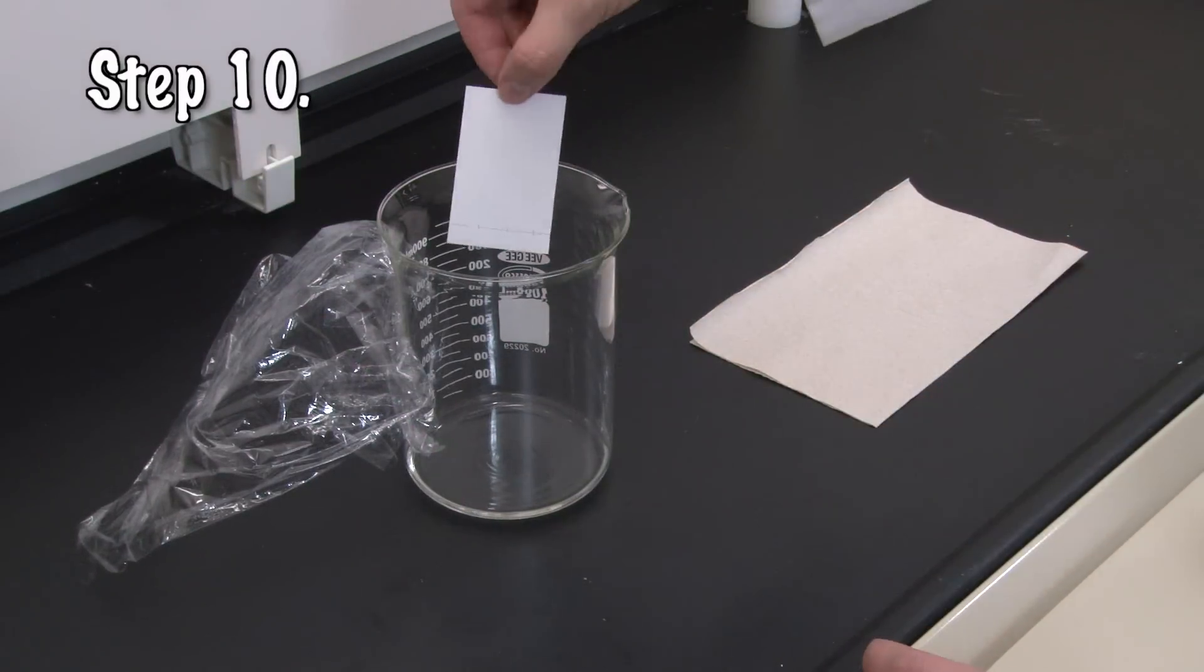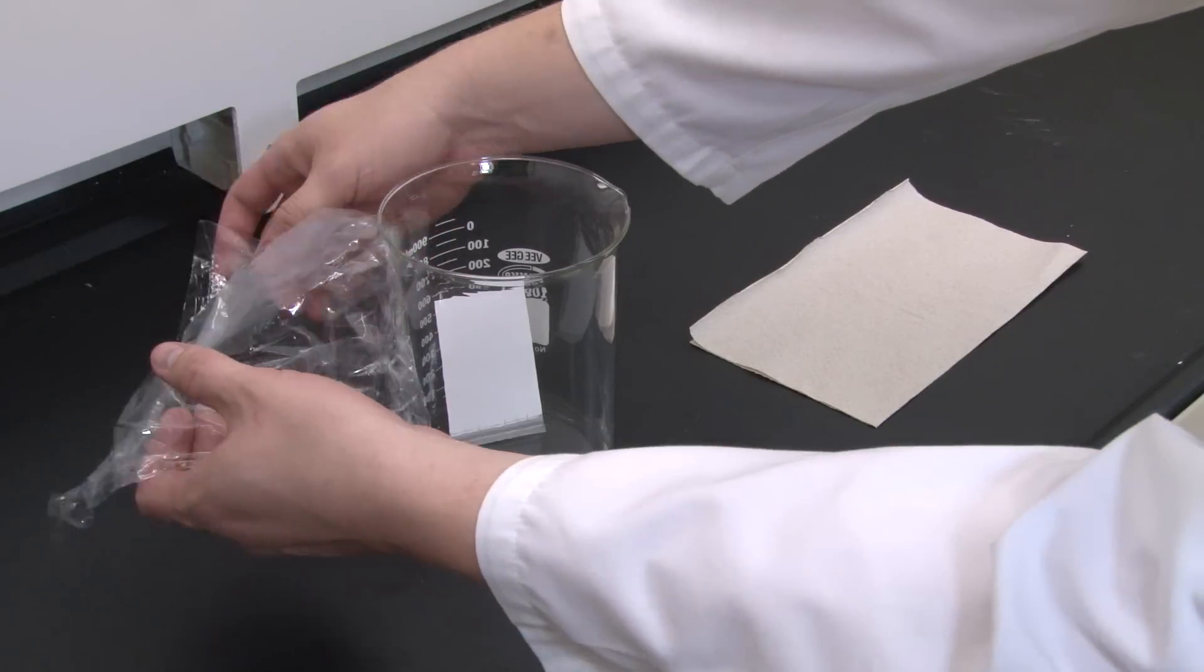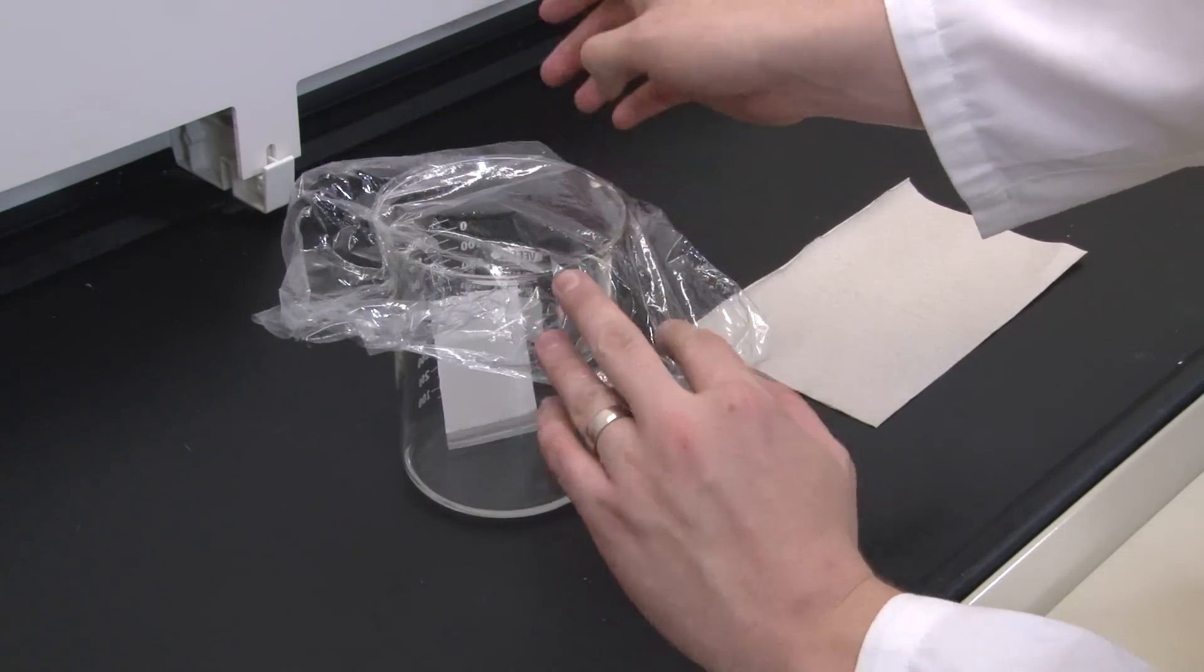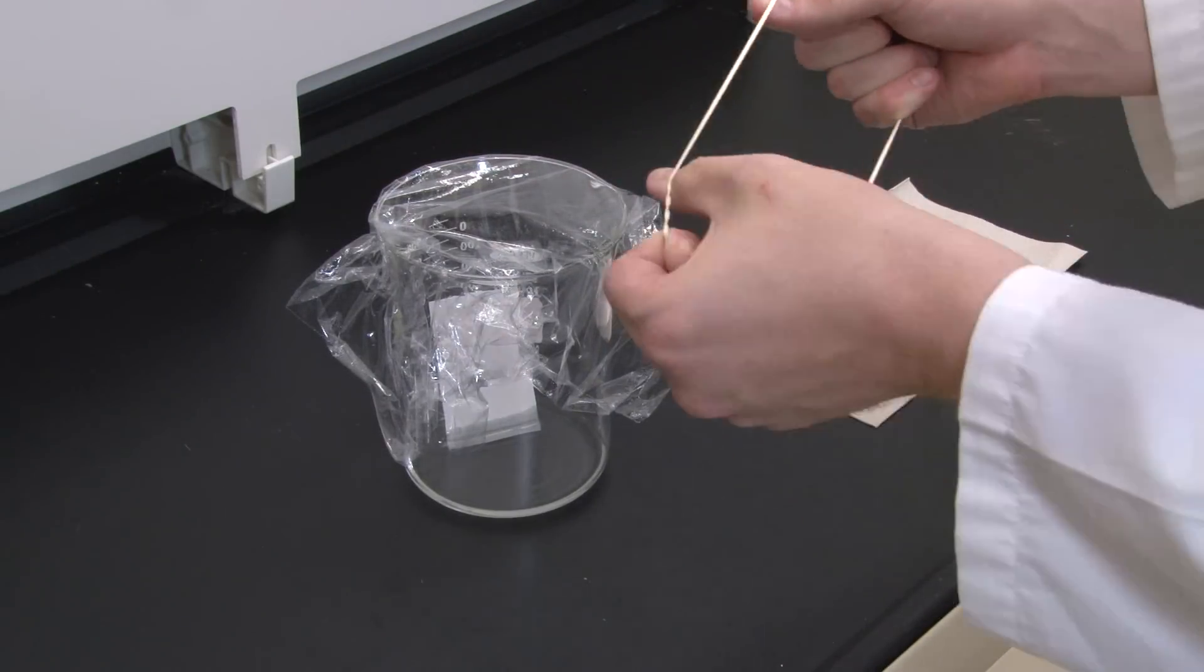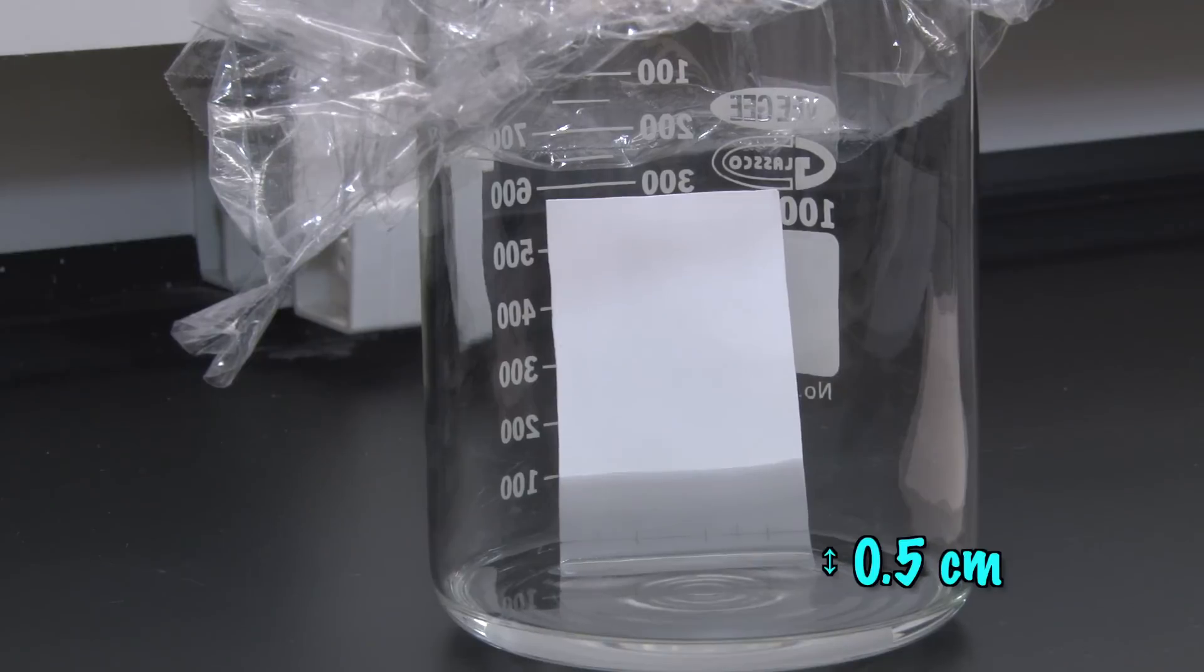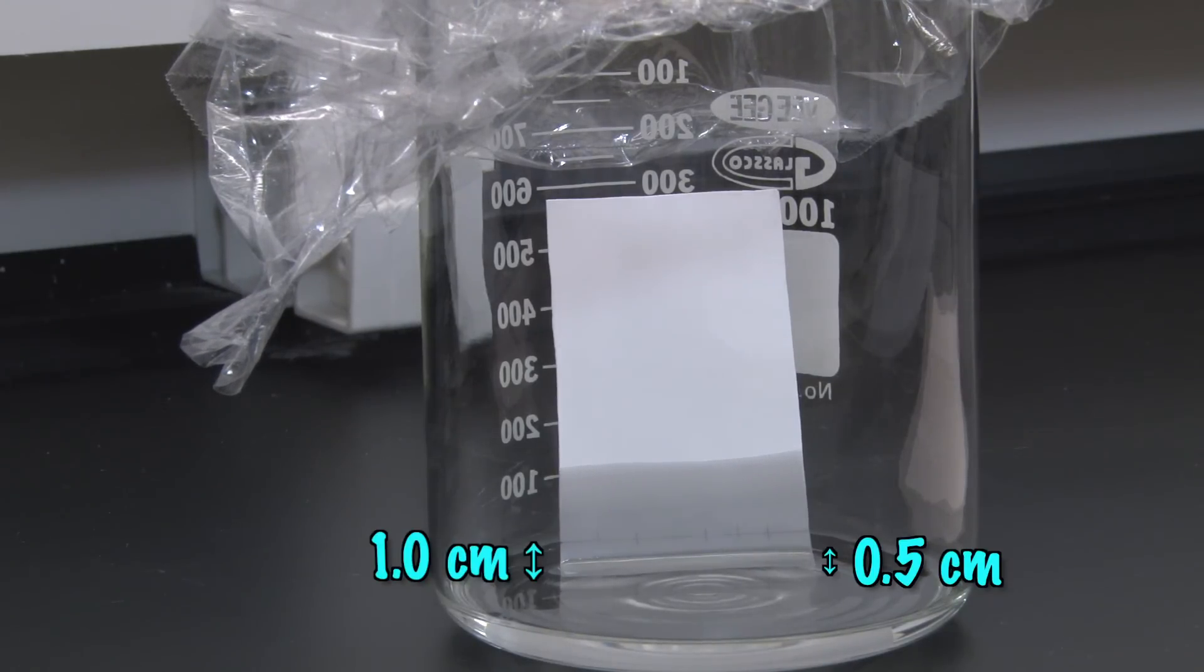Once all your spots look good, you're ready to carefully lower your TLC sheet into the developing chamber and replace the cover. Make sure the sides of the sheet don't touch the beaker, and make sure the spots remain above the surface of the liquid. That's why we poured the developing solvent to a depth of one half a centimeter, while the spots were made one centimeter from the bottom of the TLC sheet.